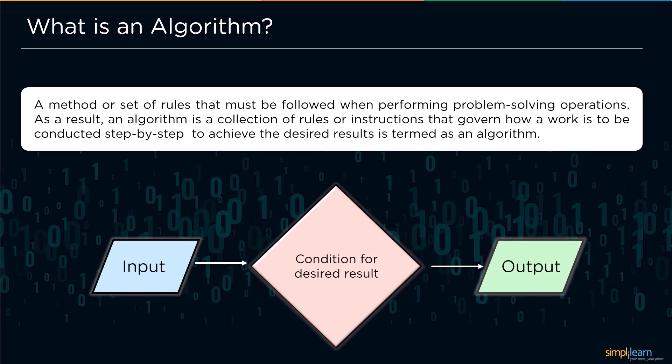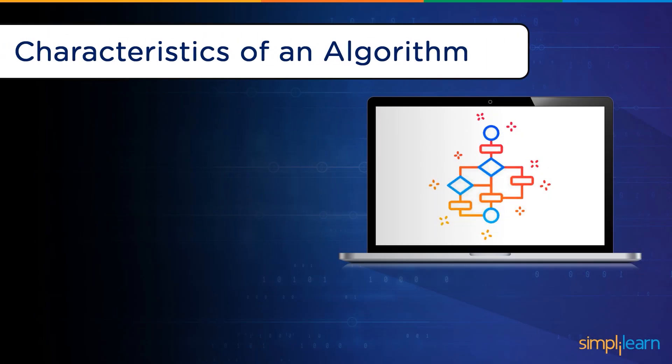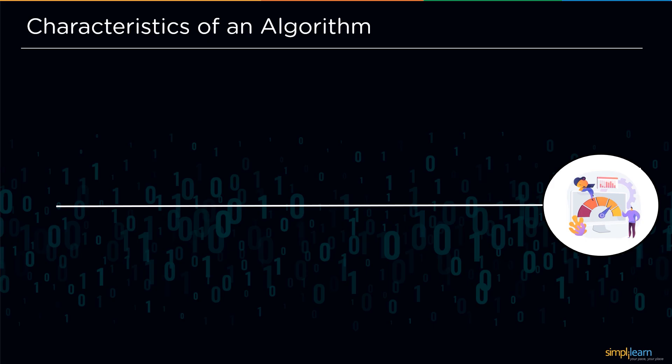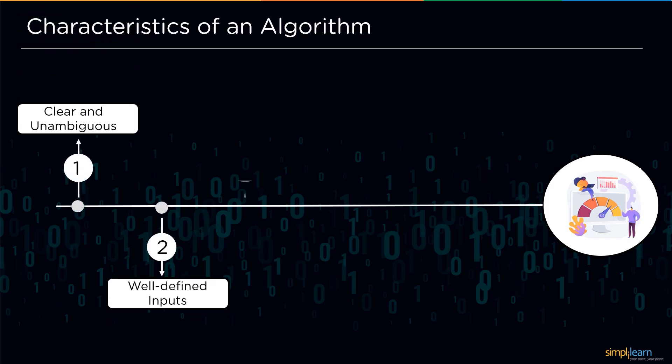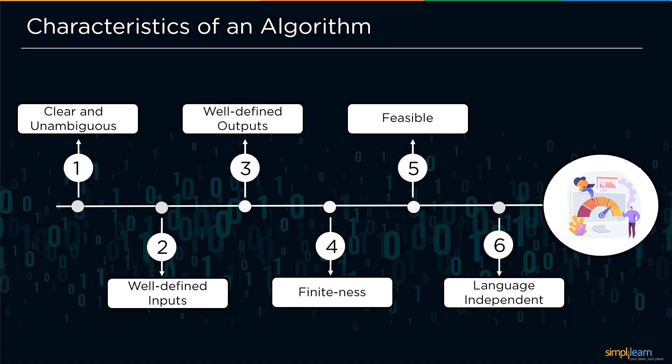Now we will move ahead and understand the characteristics of algorithms. Basically we have six characteristics of algorithm. First, it should be clear and unambiguous. Second, it has to be well-defined inputs. Third, it has to be having well-defined outputs as well. Fourth property is its feasibility, followed by finiteness, and finally we have language independence.